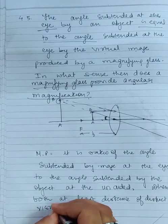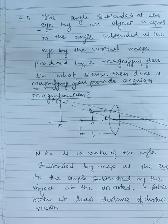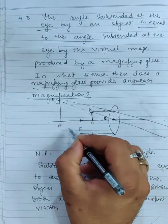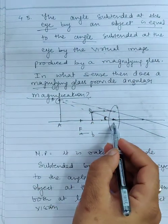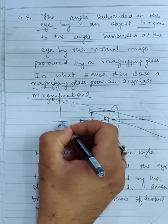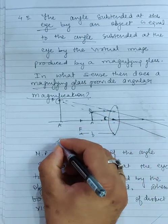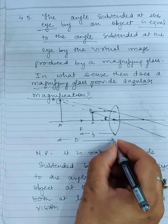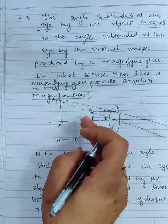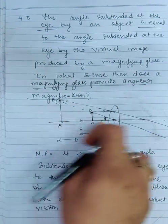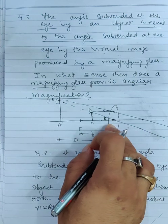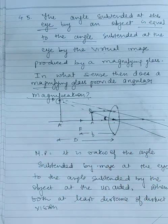This is very important. They are saying that the object and image, both of them, are at the same distance. The least distance of distinct vision is 25 cm. So the object is also placed there. With the naked eye to see the object, what is the angle subtended?